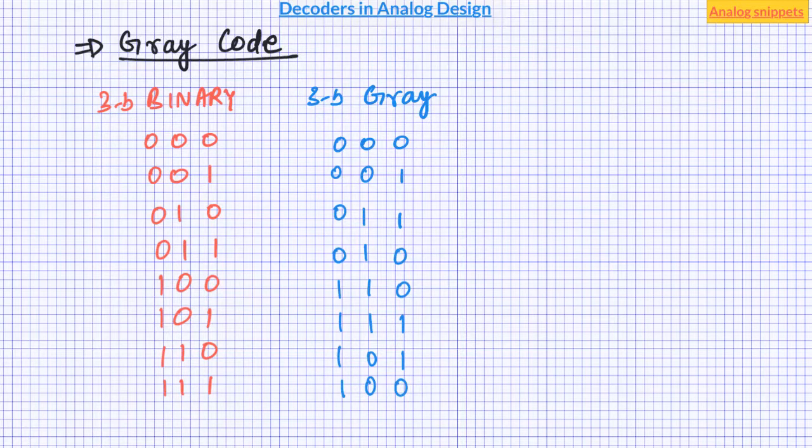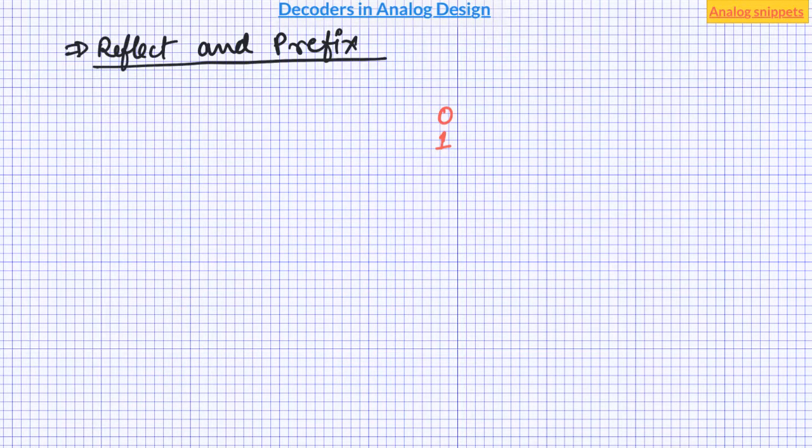There is an easy way of generating n-bit gray code using reflect and prefix rule. Start with 1-bit gray code which is simply 0 and 1. To generate 2-bit gray code first reflect the 1-bit gray code. And then prefix upper half with 0 and lower half with 1. To generate 3-bit gray code again reflect the 2-bit gray codes.